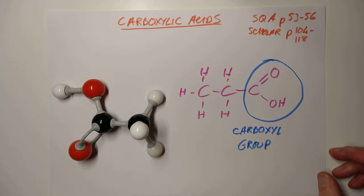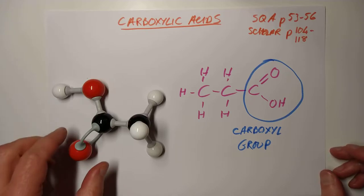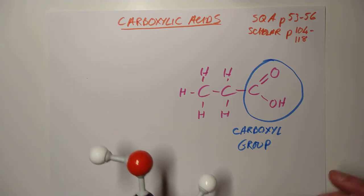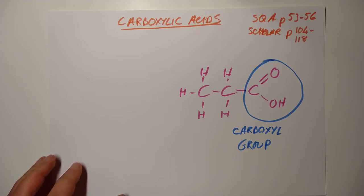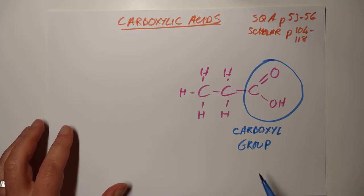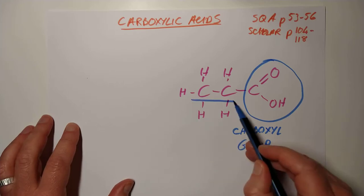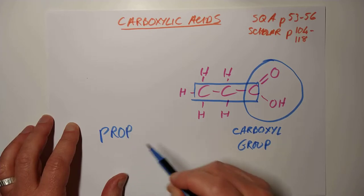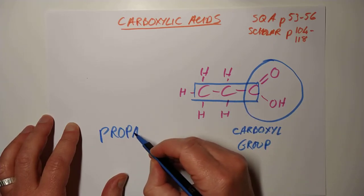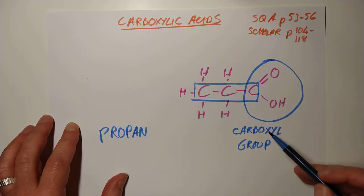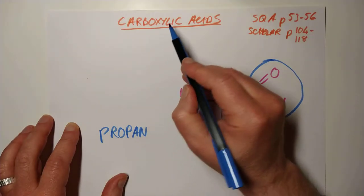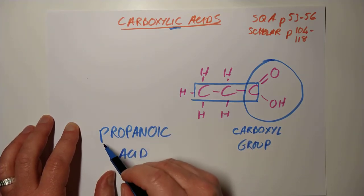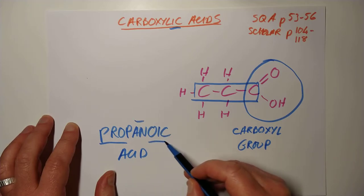You're required to know the first eight carboxylic acids, just like the first eight alcohols and the first eight alkanes and alkenes. You're not required to know any names of branches. The naming is dead easy - this one here has a chain of three carbons, so it's going to be 'prop'. There are all single bonds between the carbons, so it's 'propan-', and then because it's a carboxyl group it's a carboxylic acid, so this is propanoic acid.